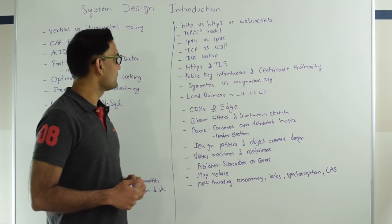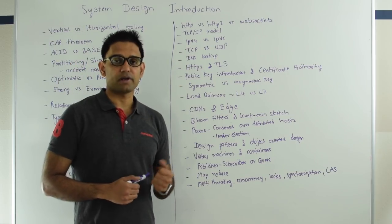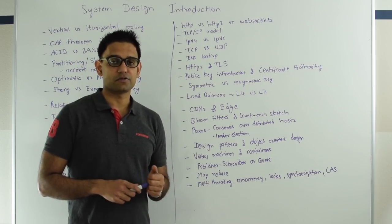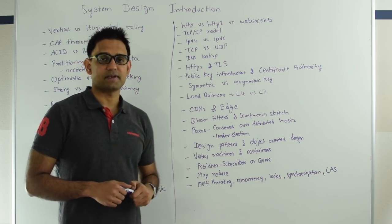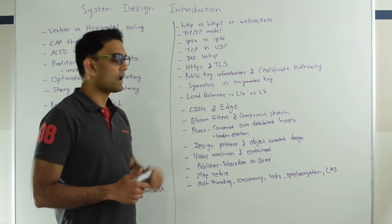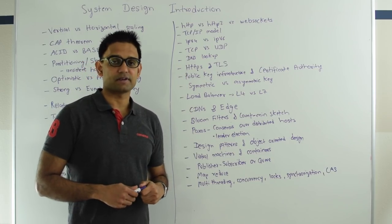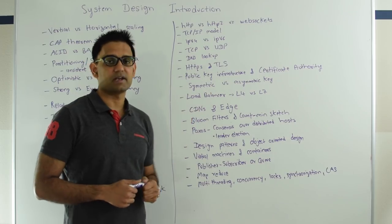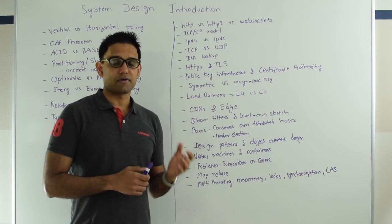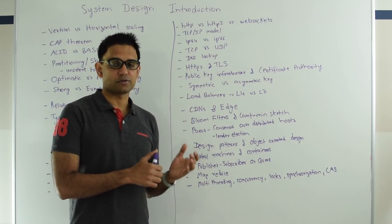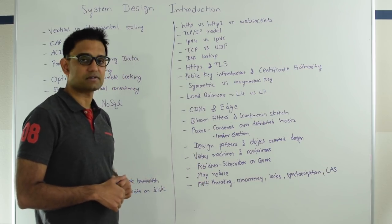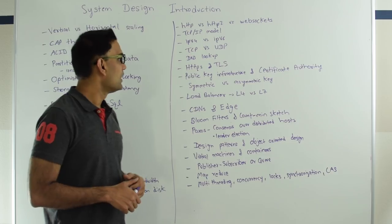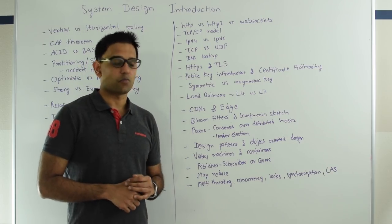Next up is TCP IP model and there are four layers in TCP IP model and it's good to know what each layer does. Then we have IPv4 versus IPv6. So IPv4 has 32-bit addresses and IPv6 has 128-bit addresses. We are running out of IPv4 addresses. So the world is migrating towards IPv6 and it's good to know some of the details around that and also how does the IP routing works.